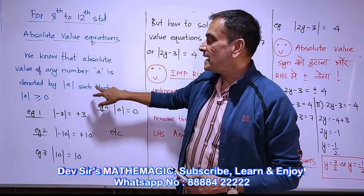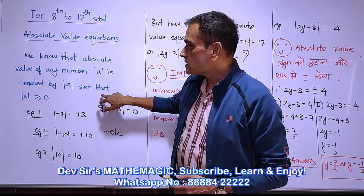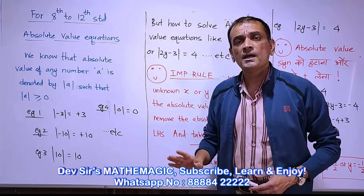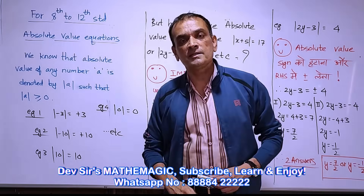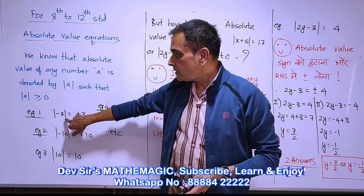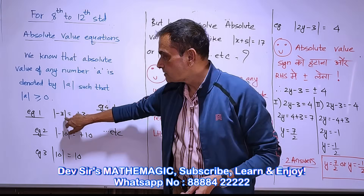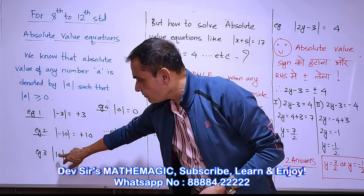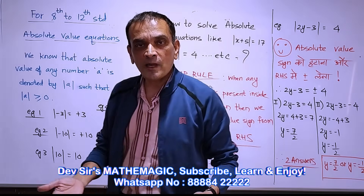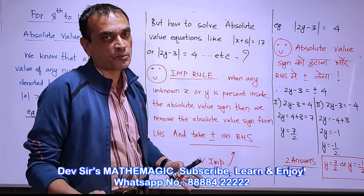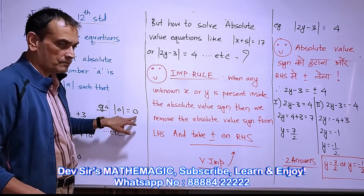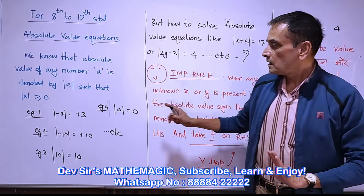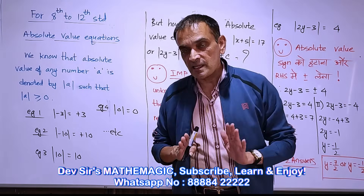The absolute value of any number a is denoted by this symbol, such that the absolute value of a is greater than or equal to zero. Absolute value cannot be negative — it can be zero or greater than zero. For example, absolute value of minus 3 is plus 3. Absolute value of minus 10 is plus 10. Absolute value of 10 is 10. The absolute value is always positive. Absolute value of zero is zero. This is the definition you learned in 9th standard.